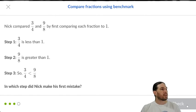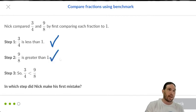Nick compared three-fourths and nine-eighths by first comparing each fraction to one. He says that three-fourths is less than one. So far, so good. I agree. Step two, nine-eighths is greater than one. Also true because nine is a bigger number than eight. If I had a pizza in eight slices and I wanted to eat nine slices of pizza, I would need more than one pizza to make that happen. I would just have to. So yes, that's also correct. Step three, so three-fourths is less than nine-eighths. I agree with that step as well. Looks to me like Nick didn't make a mistake here.